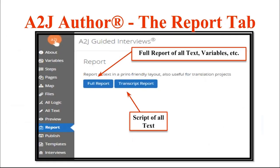Then we have the Report tab. The Report tab is a great tool to use when you've basically finished your guided interview and need to have it peer reviewed. The full report will generate a report of all text, variables, and conditions used inside a guided interview. The transcript report is just a script of the text — so if you're having it translated into another language, you would use the transcript report because the translator just needs to translate the forward-facing text for the end user.